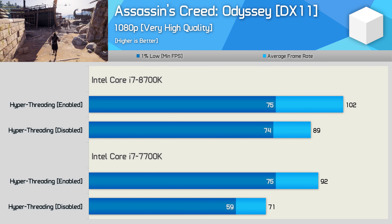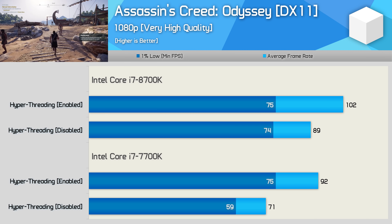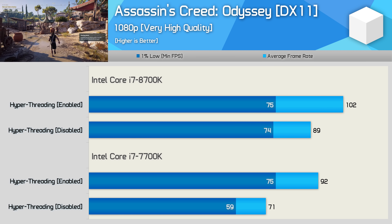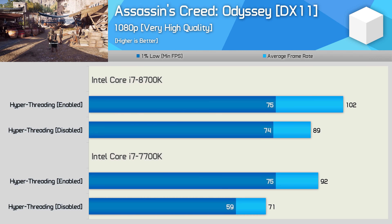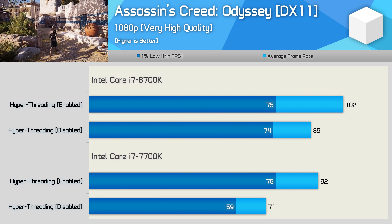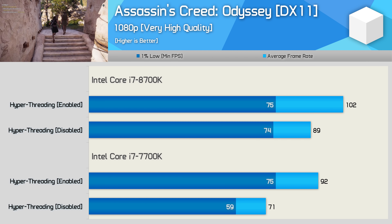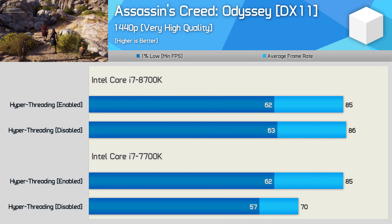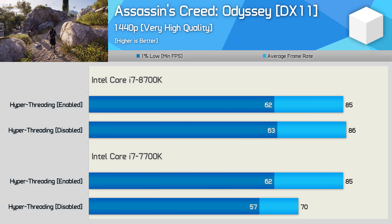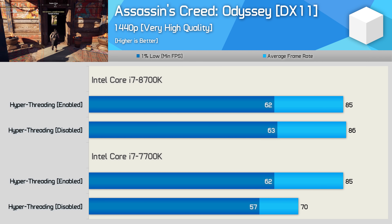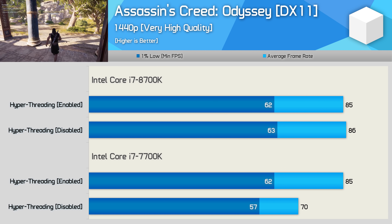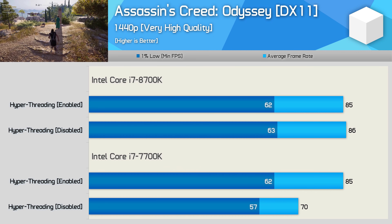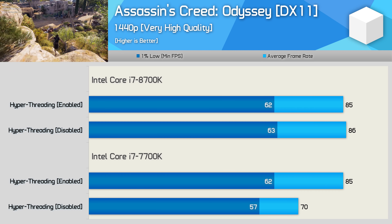First up we have the 1080p results for Assassin's Creed Odyssey. The 8700K only saw a 13% reduction for average frame rate with no change to the 1% low. The 7700K, with its fewer cores, saw a massive 23% drop-off for average frame rate and 21% for the 1% low. Those with quad-core processors will be impacted significantly more. If you're primarily GPU-bound at 1440p, the 8700K does fine without hyperthreading, but the 7700K still suffers an 18% reduction. Those with quad-cores or dual-cores will really feel any reduction in hyperthreading efficiency.